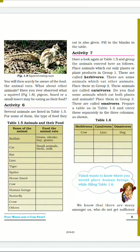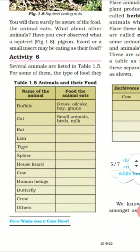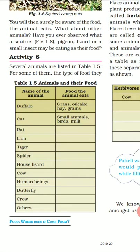In Activity 1.5, Table 1.5 — Animals and Their Food — we have a list of animals on the left side and on the right side the food that animal eats. Buffalo will eat grass, oil cake, hay, grains, etc. Cat will be eating small animals, birds, milk, etc. Rat will also be eating small insects, milk, bread. Lion will eat only other animals. Tiger will eat only other animals. Spider will eat only other small insects trapped in its web.